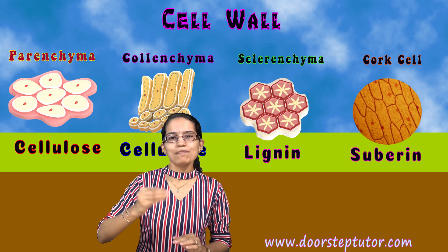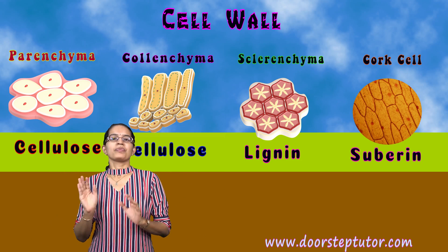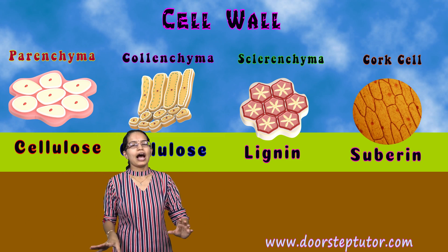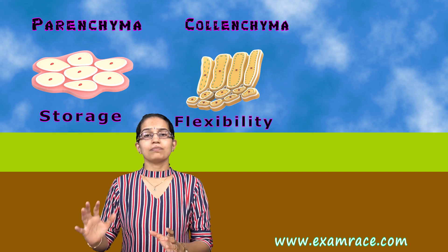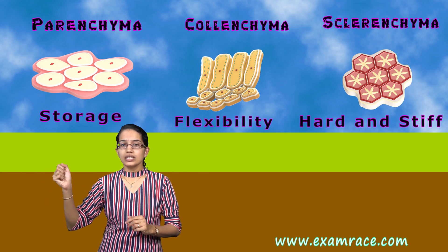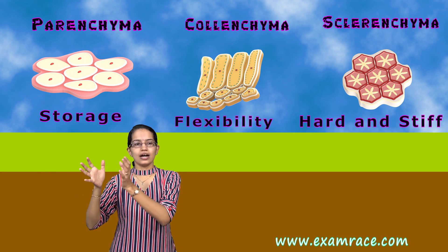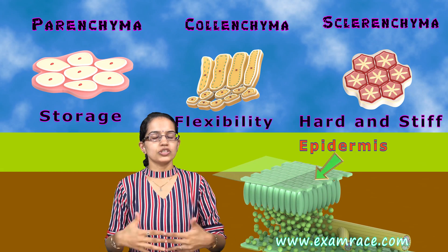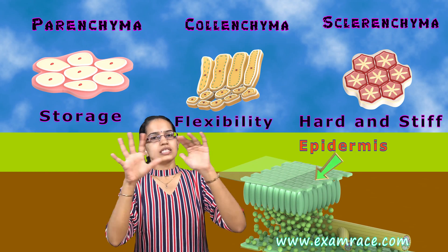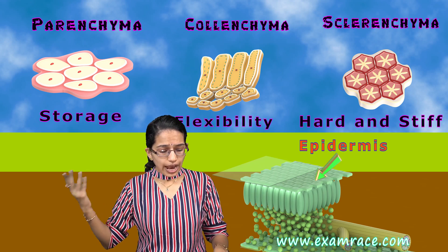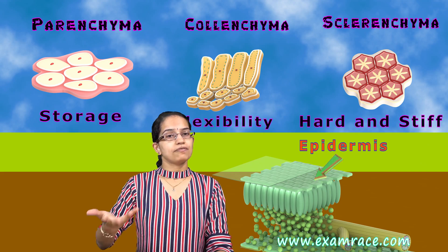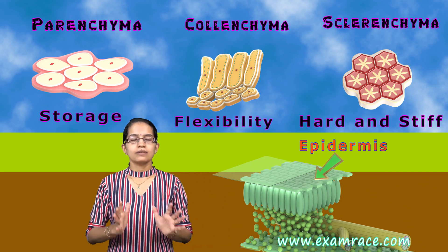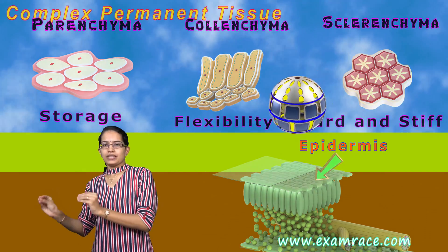To summarize the simple permanent tissues: parenchyma for storage; colenchyma for flexibility, bending, and mechanical support; sclerenchyma for stiffness, rigidity, and hardness. Then we focused on epidermis, which is the single-celled outermost layer. Different regions have different functions — the functions of epidermis in roots are different as compared to other parts. Now coming on to the complex permanent tissues.